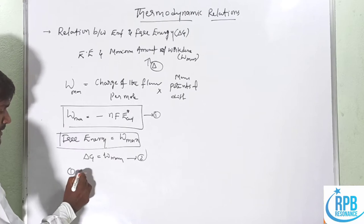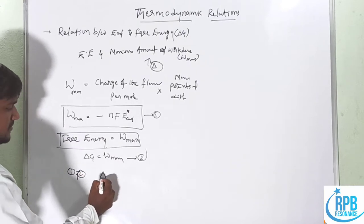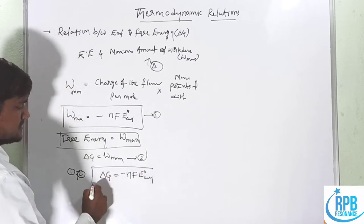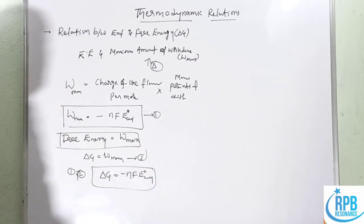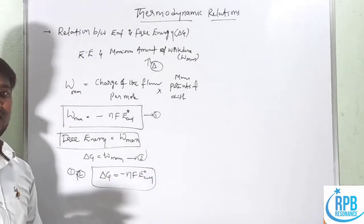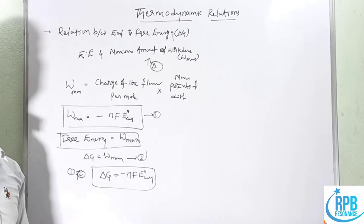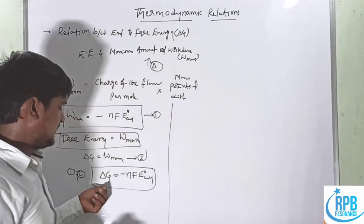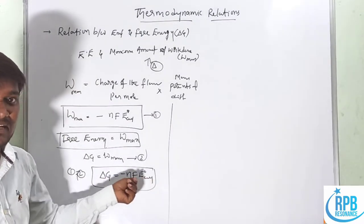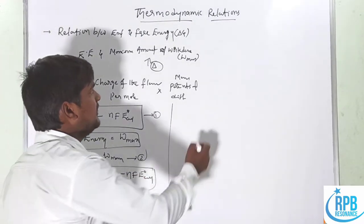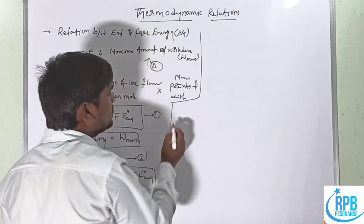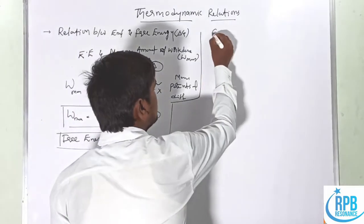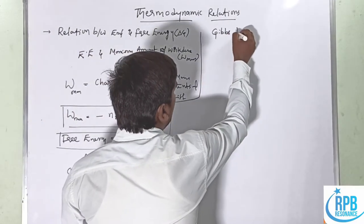So delta G = -nFE_cell. This is the best method for free energy calculations compared to other titration methods. This relation is interlinked to the Gibbs-Helmholtz equation.